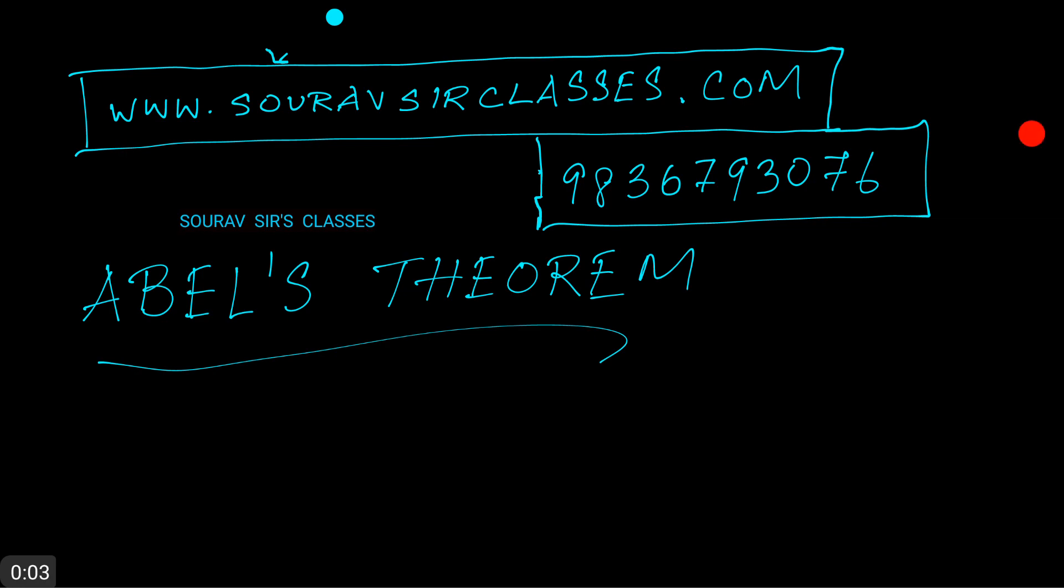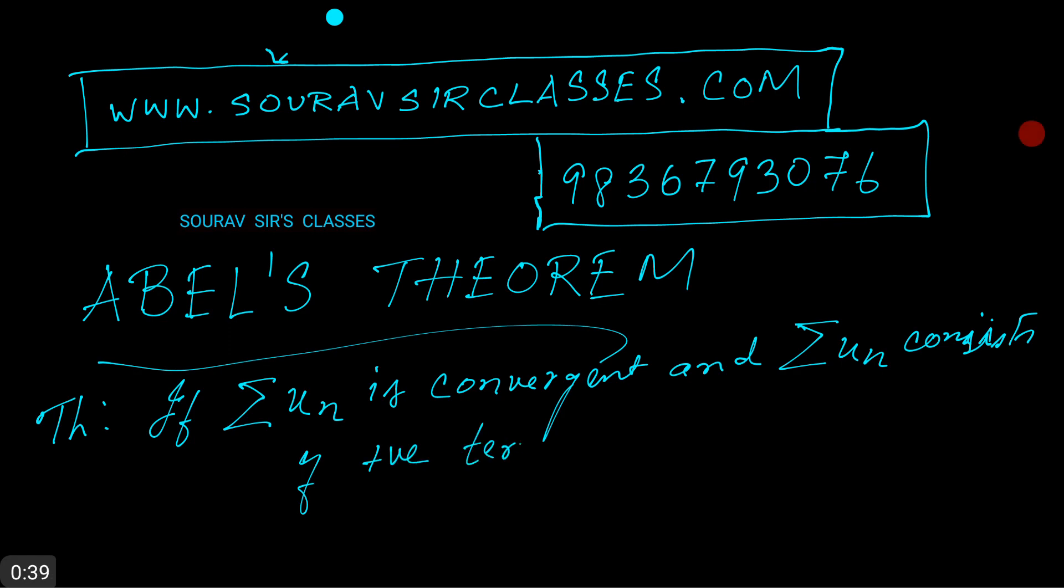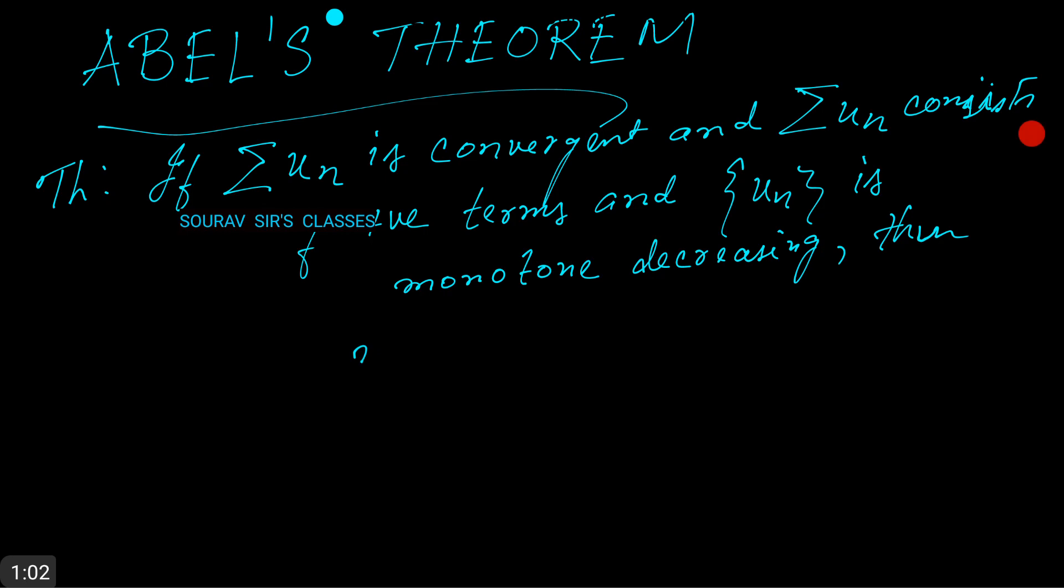Hello and welcome to Sourav Sir's Classes. Today we'll do something called Abel's Theorem. So to state the theorem, we write: if the series Σun is convergent and if Σun consists of positive terms, and if the sequence un is monotone decreasing, then n times un tends to 0 as n tends to infinity.